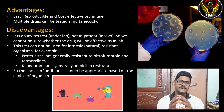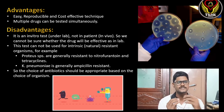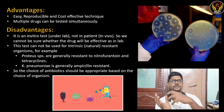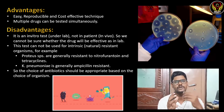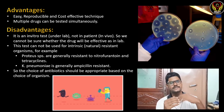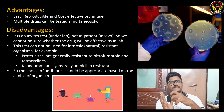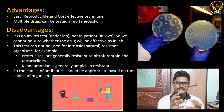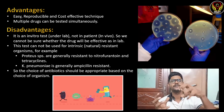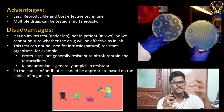Coming to the disadvantages: it is an in vitro test done under lab conditions, not in a patient, so we can't judge how the drug will truly act in a patient where many chemicals are involved. Also, this test cannot be used for intrinsically resistant organisms — for example, Proteus species are generally resistant to tetracycline antibiotics, so we should not select tetracycline against Proteus and say it is not working. We have to know these basic things.